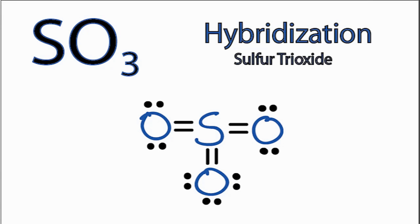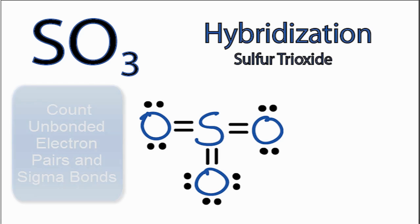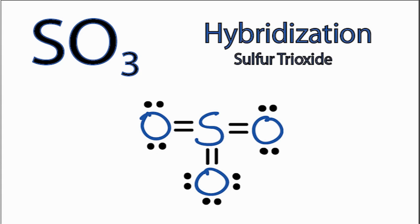Let's look at the hybridization for each atom in SO3, sulfur trioxide. We'll look at the regions around each atom to figure out the hybridization, counting unbonded electron pairs and sigma bonds. Between each sulfur and oxygen atom, we have a double bond, which is made up of a sigma bond and a pi bond. We're only concerned with the sigma bonds here.